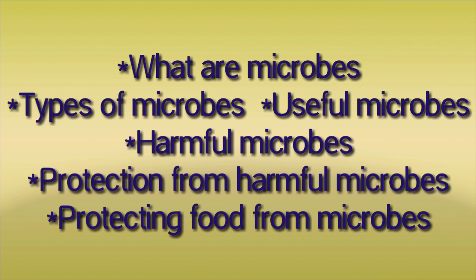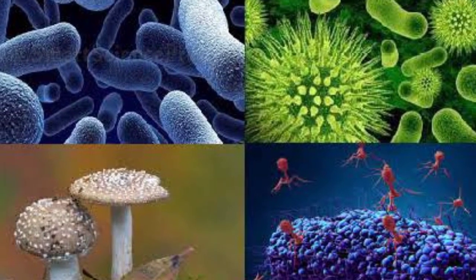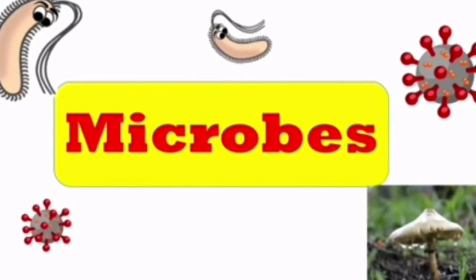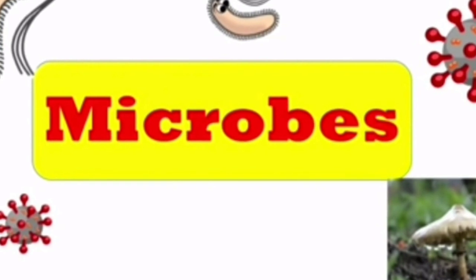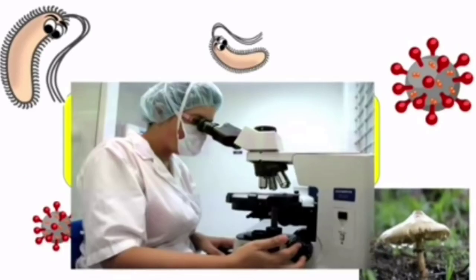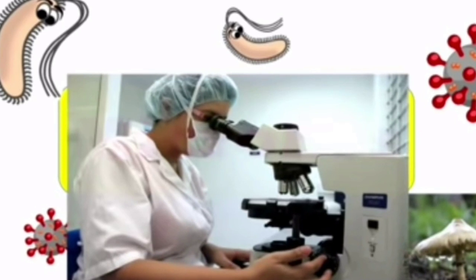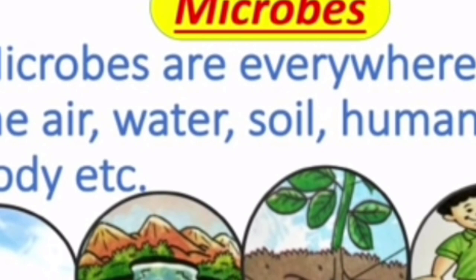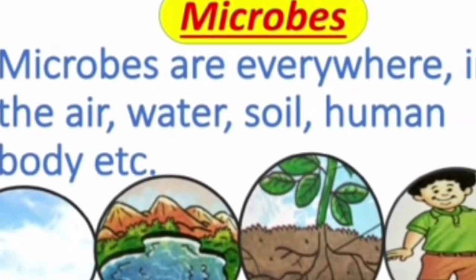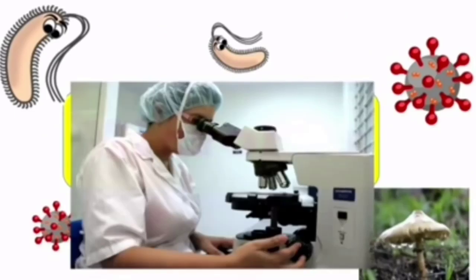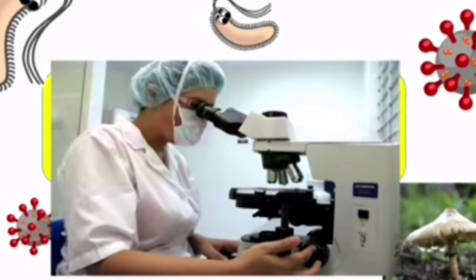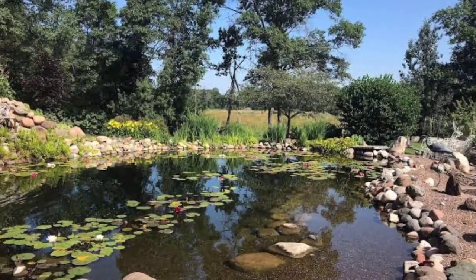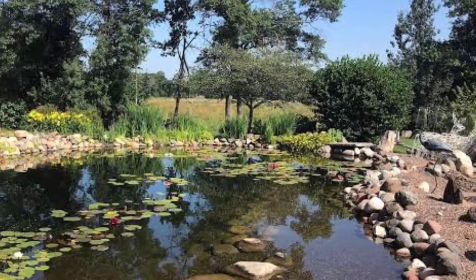So first, what are microbes? We all are surrounded by different types of germs. These germs are actually very small living organisms. We can see them only with the help of a microscope. That is why they are also called microbes. A microscope shows an enlarged image of very small things. Thousands of microbes can be present in a single drop of pond water.